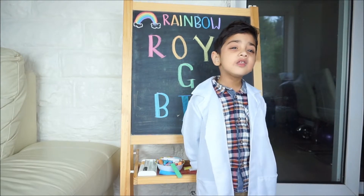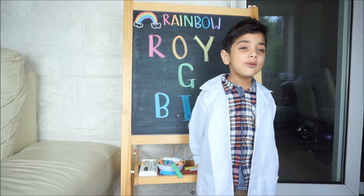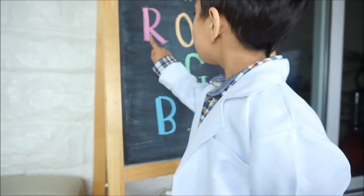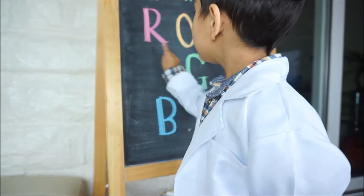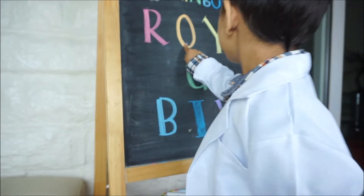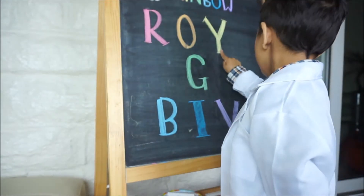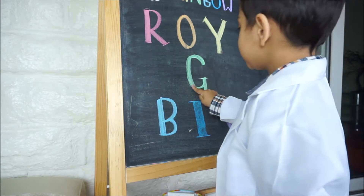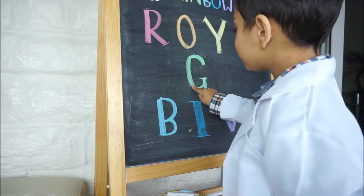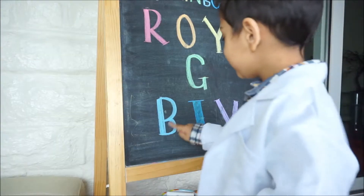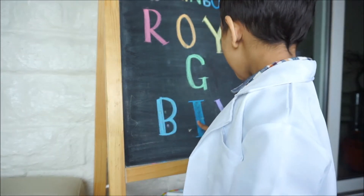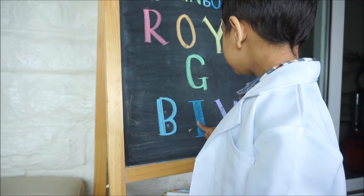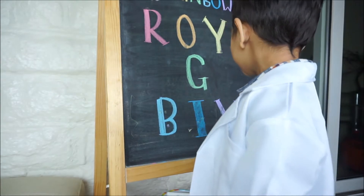It tells you all the colours of the rainbow. R is for red, O is for orange, Y is for yellow, G is for green, B is for blue, I is for indigo. Roy G. Biv!